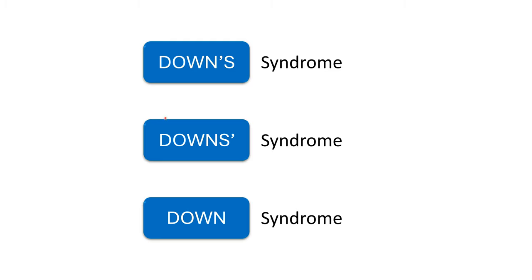First, let's do some brainstorming. Which of these is the correct spelling — is it 'Downs syndrome,' 'Down's syndrome' with an apostrophe, or 'Down syndrome'? Take a pause and think. It is important to learn the correct spelling, especially in medical science. The correct word is 'Down syndrome' — it is not 'Down's syndrome.'